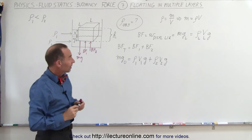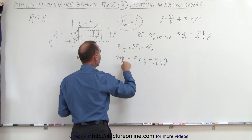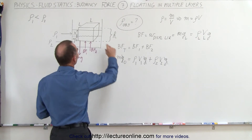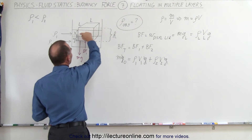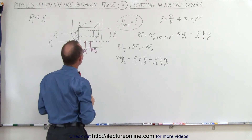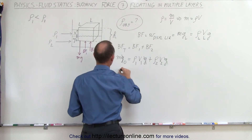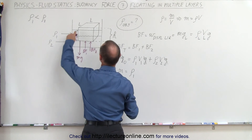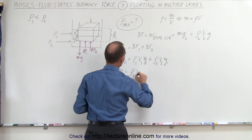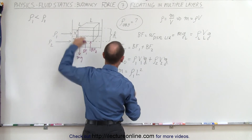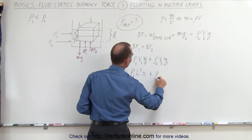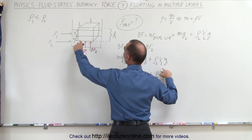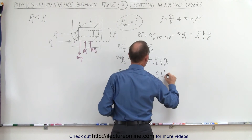Right away we can see there's a g everywhere, so we cancel all the g's. Now let's calculate the displaced volumes for each layer. The mass of the object equals density 1 times volume 1 — which is the cross-sectional area L² times the depth x in the first layer — plus density 2 times volume 2.